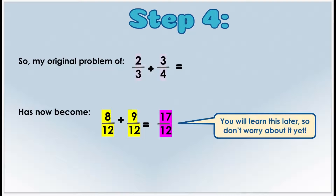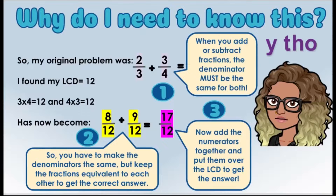My original problem two-thirds plus three-fourths has now become eight-twelfths plus nine-twelfths. When you add or subtract fractions, the denominator must be the same for both. With our original problem we had two different denominators, so to solve it we first had to get a common denominator — the least common denominator — which we found was 12.